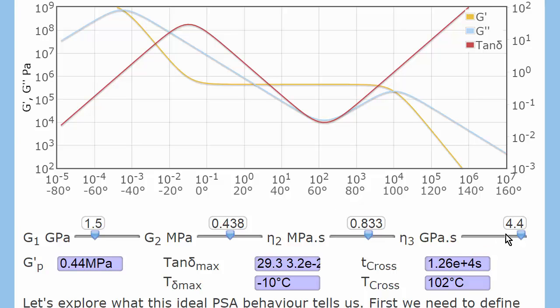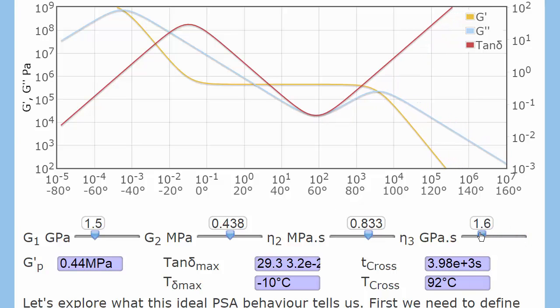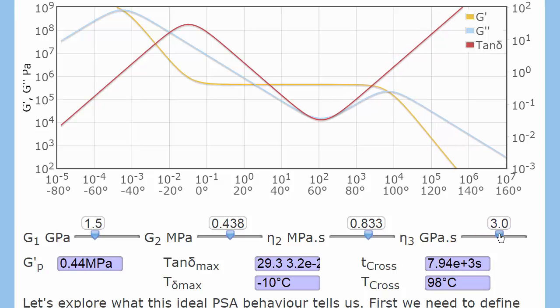and then, and this is the difficult bit, by making sure that your tackifier also has the desirable effect on eta 3, and that's harder to calculate. For example, aromatic tackifiers will tend to strengthen aromatic systems better than aliphatic tackifiers, but your mileage may vary.